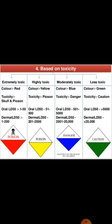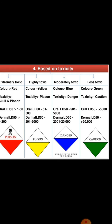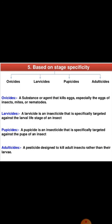Based on stage specificity: ovicides are insecticides used to kill eggs; larvicides are used to kill larva life stages of the insect; pupicides act against pupae of an insect; and adulticides kill adult insects rather than their larvae.